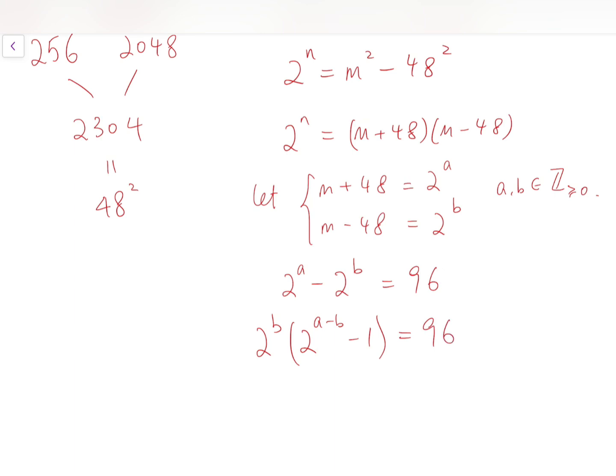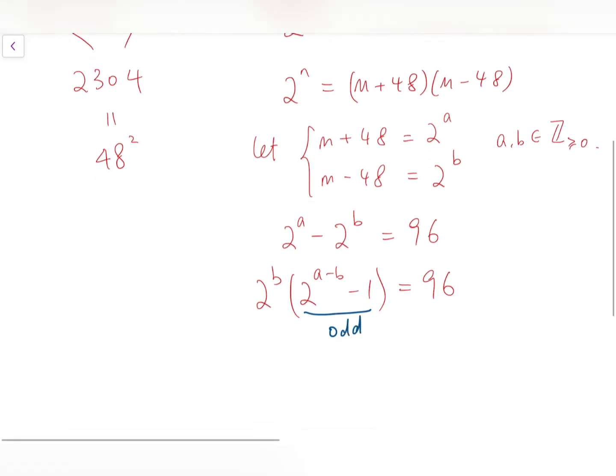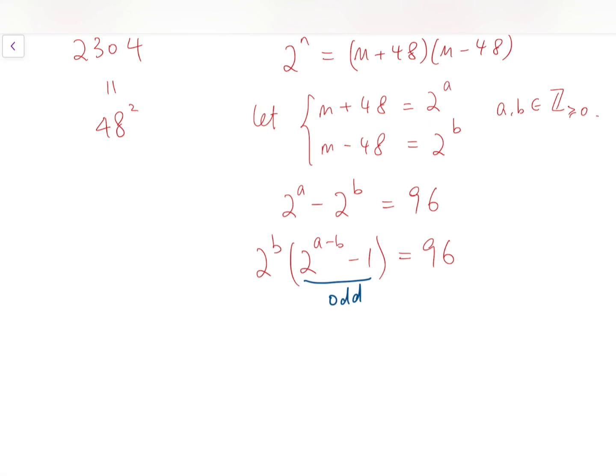At this point, we can see that the expression inside the bracket is odd. So 2^b should take up all the factors of 2, and 2^(a-b) - 1 should be the remaining odd factor.